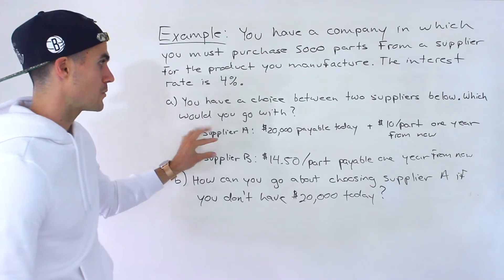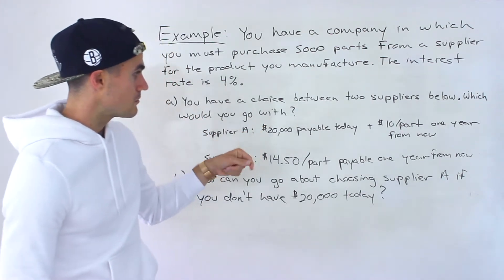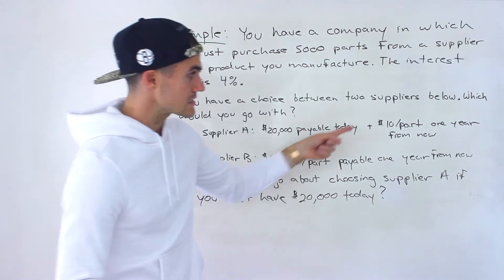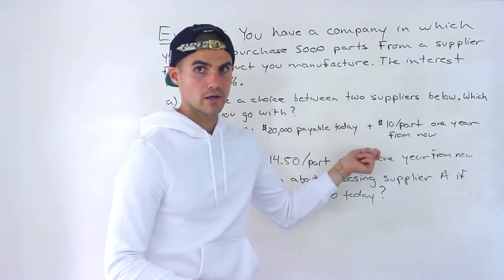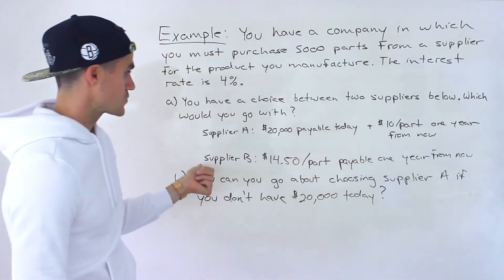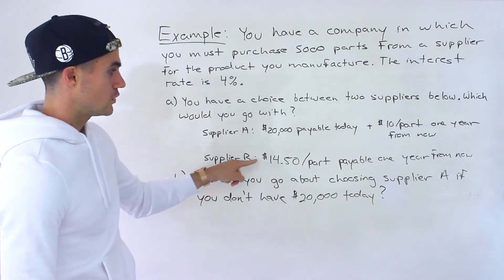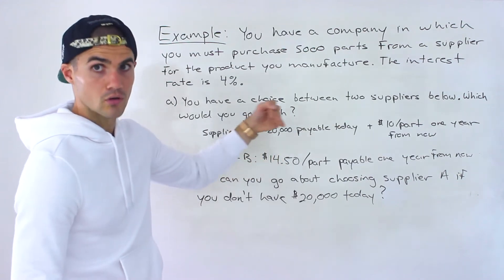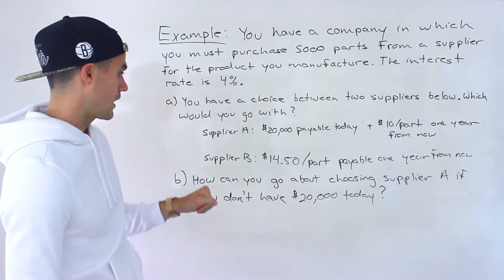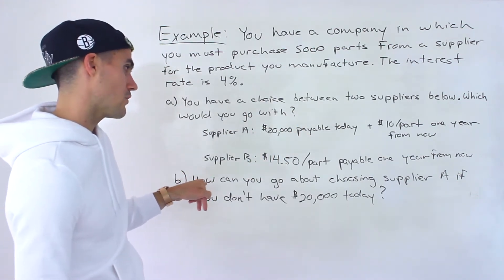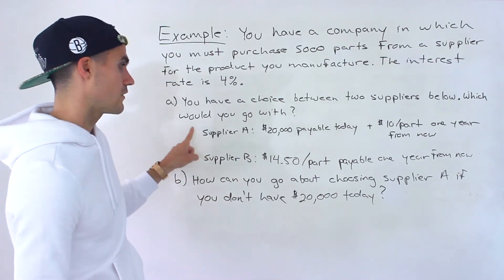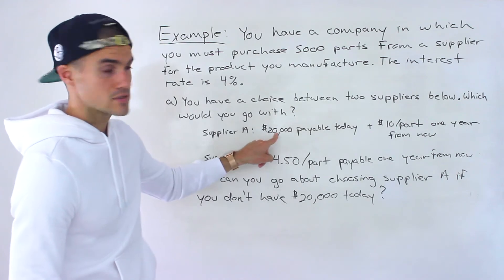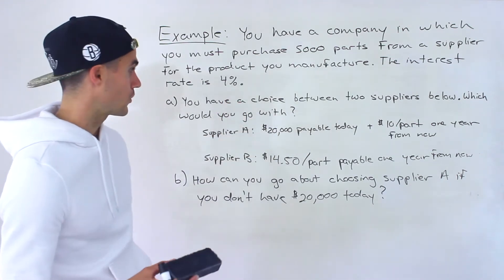With supplier A, you have to pay them $20,000 today plus $10 per part one year from now. Versus with supplier B, you're just paying them $14.50 per part, payable one year from now. And then in part B, how can you go about choosing supplier A if you don't have the $20,000 today to make that down payment?